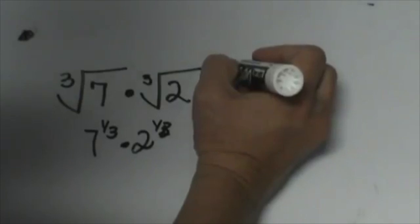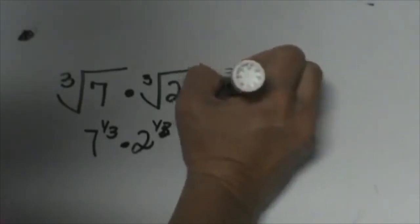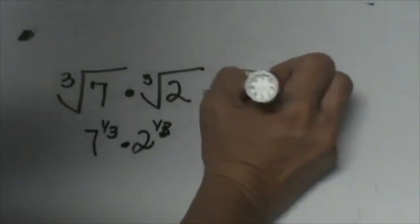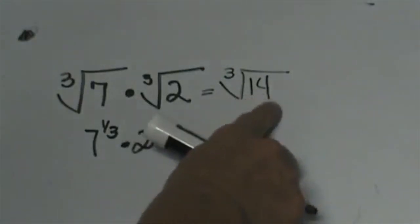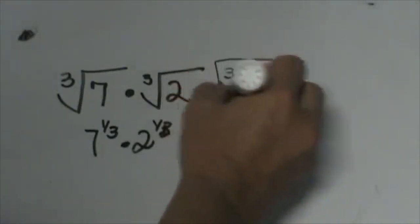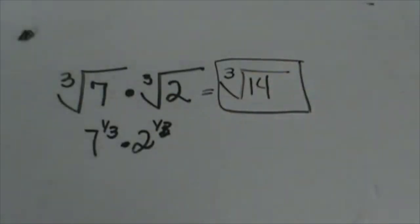So I can simplify that to the cube root of 14. Now we know that the cube root of 14 only breaks down to 2 times 7, so you can't simplify that, but that would be the answer. And that's how you would work that problem.